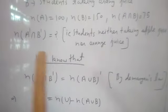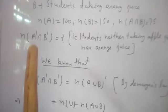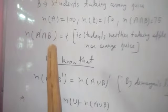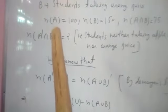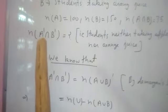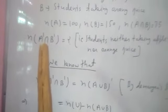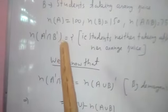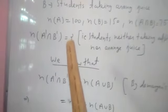So, that is equal to n(A' intersection B'). If A is the set of students taking apple juice then A' represents those students who have not taken apple juice and B' represents those students who have not taken orange juice.